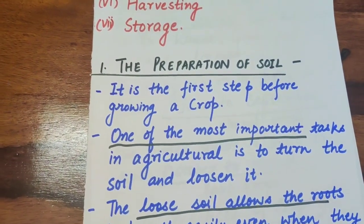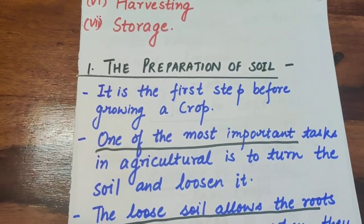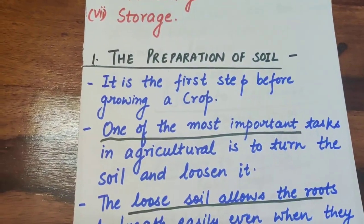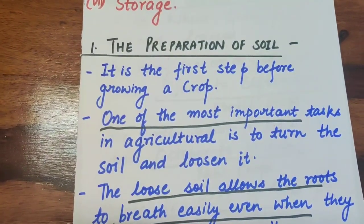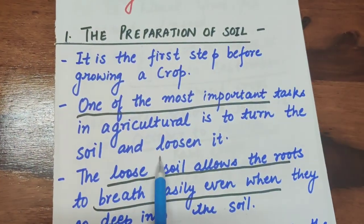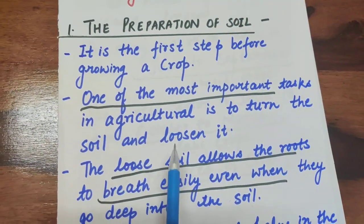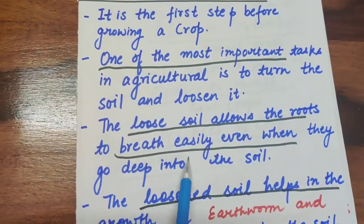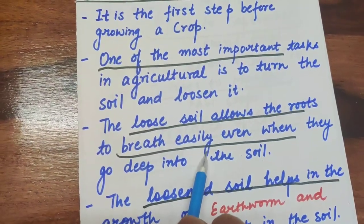The first step is preparation of soil. If the soil is not prepared or maintained properly, the crop will never grow properly. One of the most important tasks in agriculture is to turn and loosen the soil. The loose soil allows the roots to breathe easily, even when they go deep into the soil.